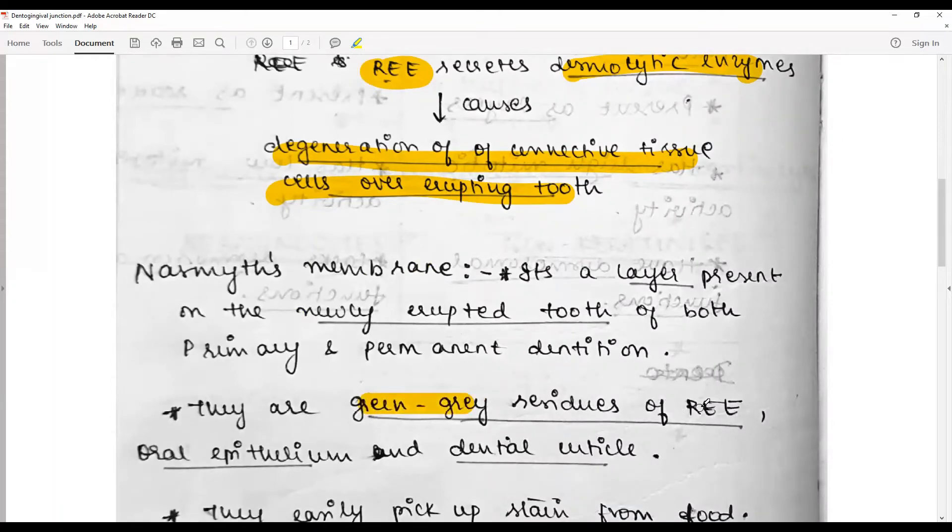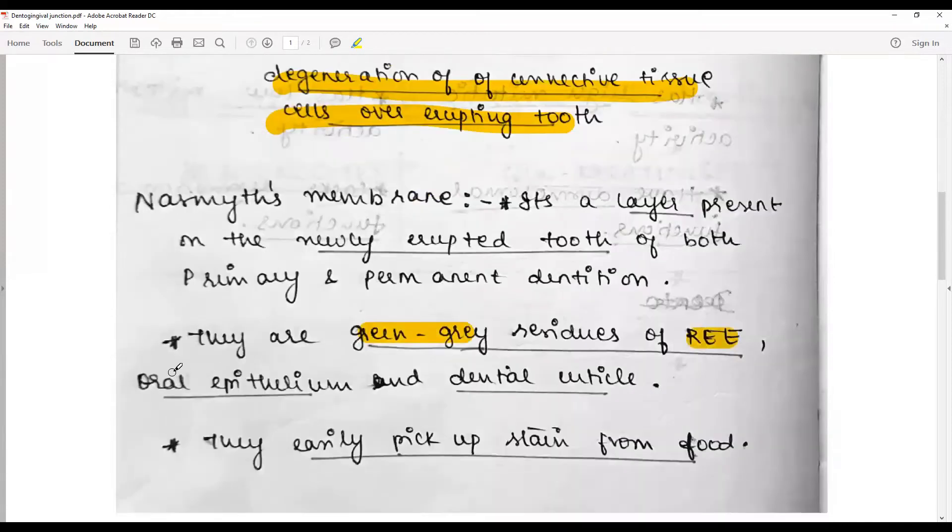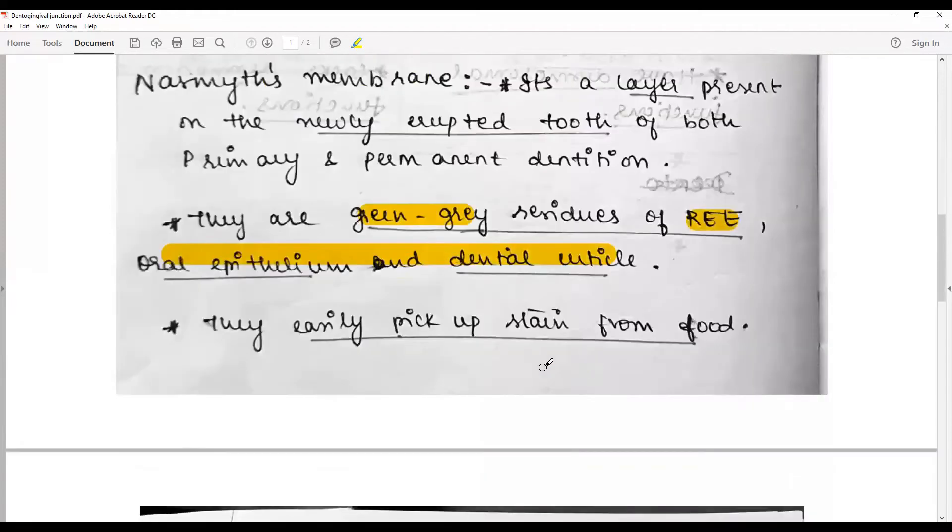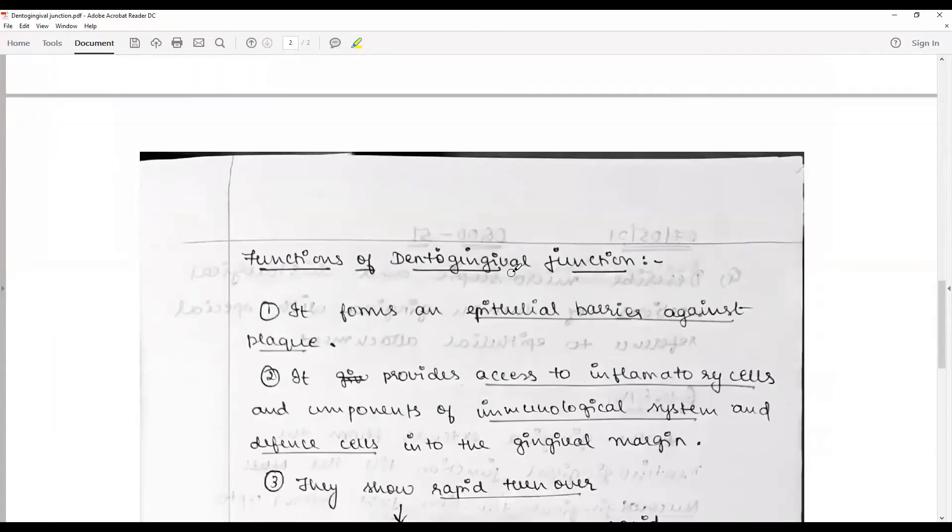and is a grayish-green residue of reduced enamel epithelium, oral epithelium, and dentin cuticles. They pick up the stain from the food. Function of the dento-gingival junction is to form an epithelial barrier against plaque.